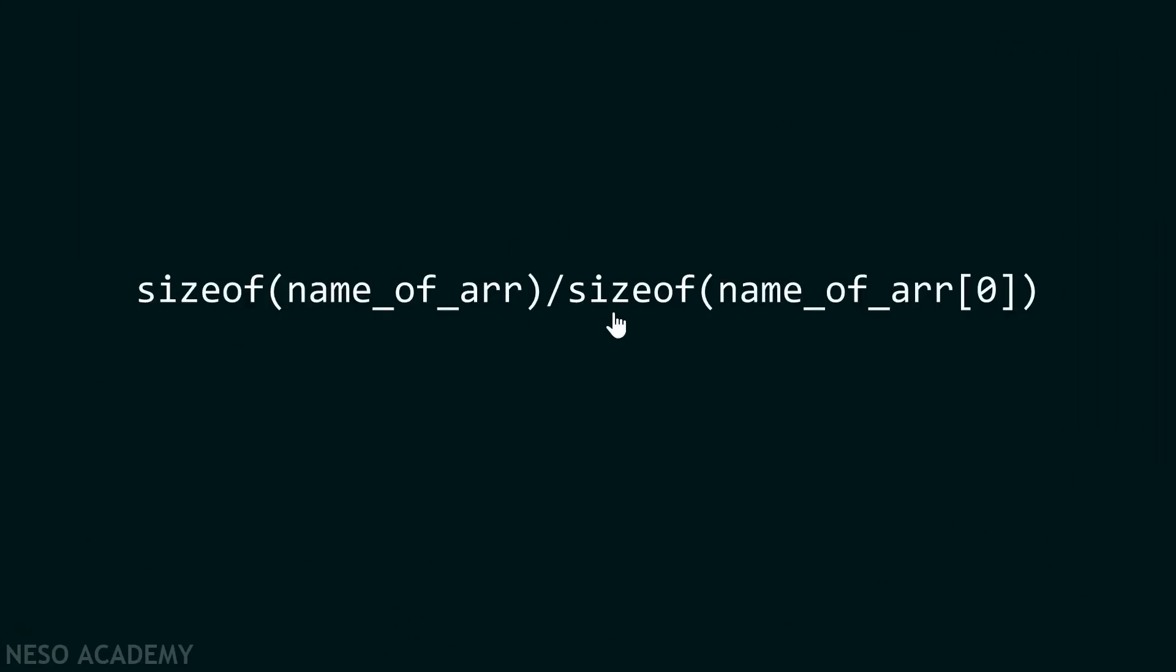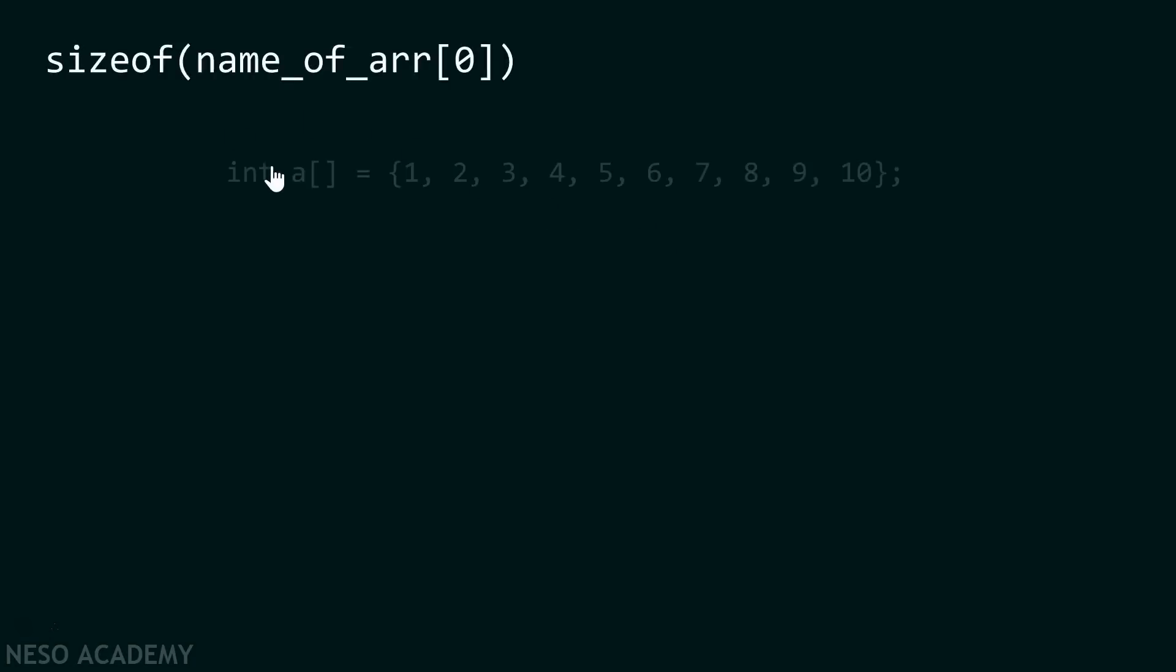Let me explain the second part to you: sizeof name of array along with square brackets and the index. What does it really mean? I am taking the same array which consists of ten elements. What is the meaning of sizeof a[0]? a[0] means first element, right?